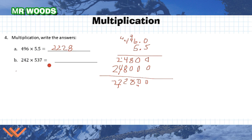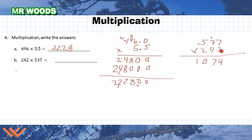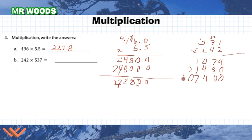Let's take a look at 537 times 242. 2 times 7 is 14; 2 times 3 is 6, carry 1, that's 7; 2 times 5 is 10, so 1,000 in the thousands spot. For the tens digit, put a 0 placeholder; 4 times 7 is 28; 4 times 3 is 12, plus 2 is 14; 4 times 5 is 20, plus 1 is 21. For the hundreds digit, put two 0 placeholders and repeat. Adding up all three rows gives a final answer of 129,954.